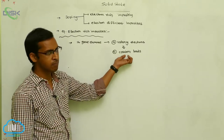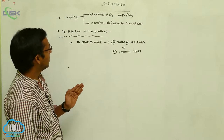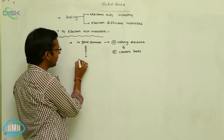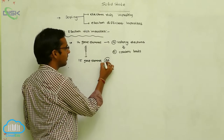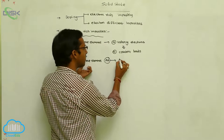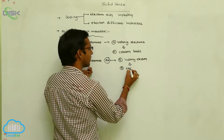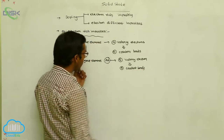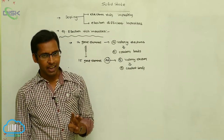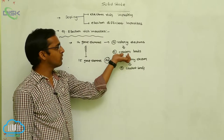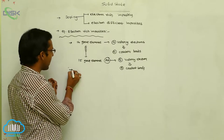The 14th group elements in the periodic table form four covalent bonds because four valency electrons are present. Now, when 14th group elements are mixed with 15th group elements like arsenic, the 15th group elements contain five valency electrons and form five covalent bonds. When mixed, only four out of five electrons are involved in covalent bonds — one is extra.